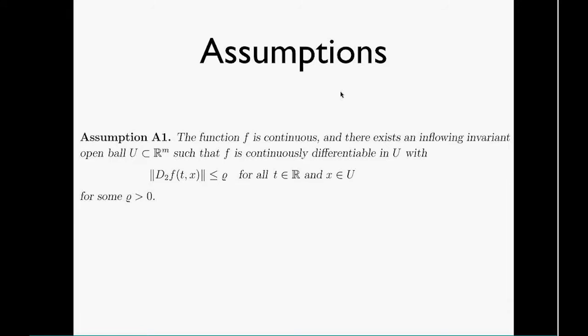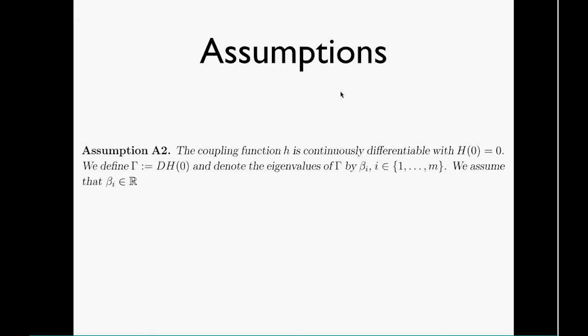The second assumption is saying that I can differentiate this function h and have control over the spectrum of h. Basically, the derivative of h at the synchronization manifold is bounded. This would be the case for example for the Kuramoto model.